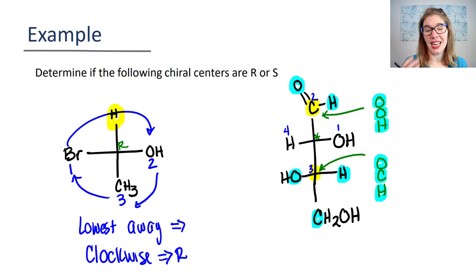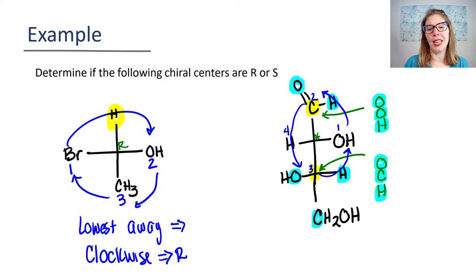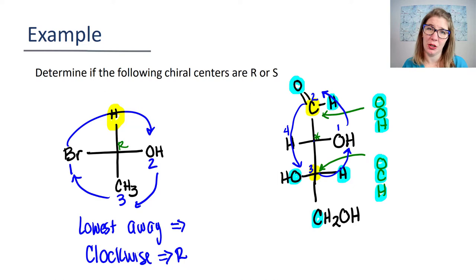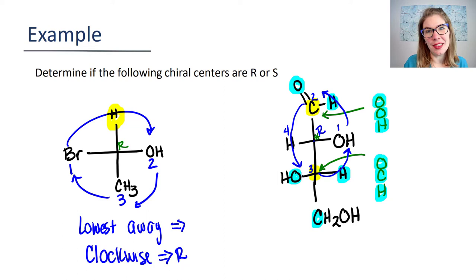Because it's on a wedge, that means it's pointing towards your face. So if you go from one to two to three and back to one, even though you're going counterclockwise — and typically counterclockwise would be S — because that lowest priority group is on a wedge, the absolute configuration for this is really R. Then for the next chiral center, honestly I want to erase everything I wrote and start fresh because there's way too much writing on this compound. So I'm going to do that.